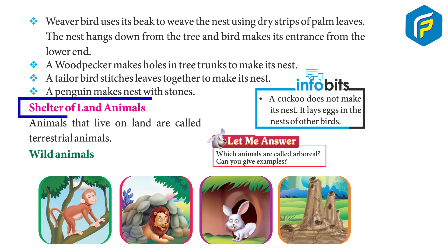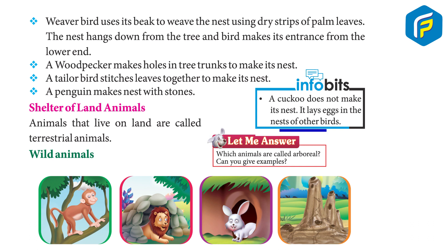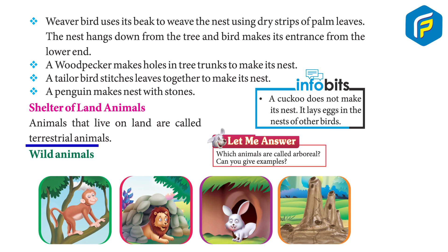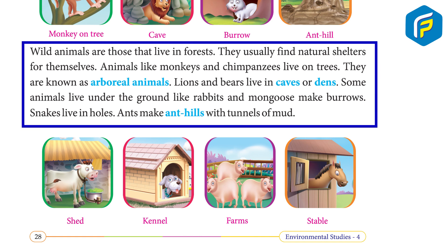Animals that live on land are called terrestrial animals. Animals like monkeys and chimpanzees live on trees — they are known as arboreal animals. Wild animals are those that live in forests; they usually find natural shelters for themselves.